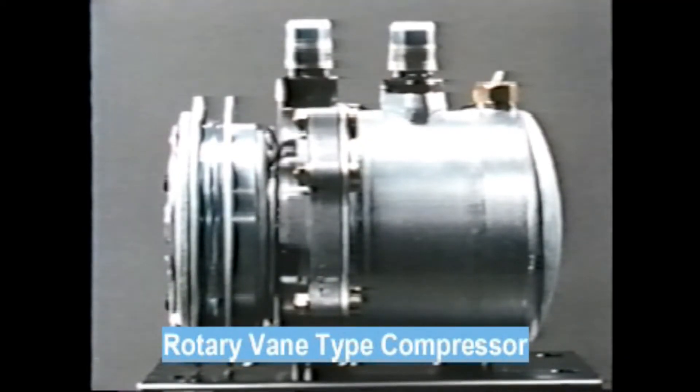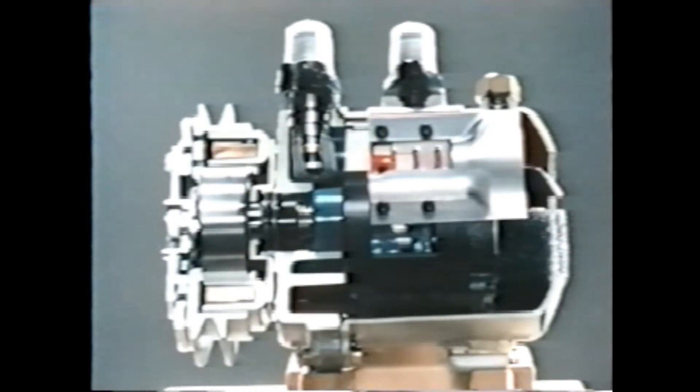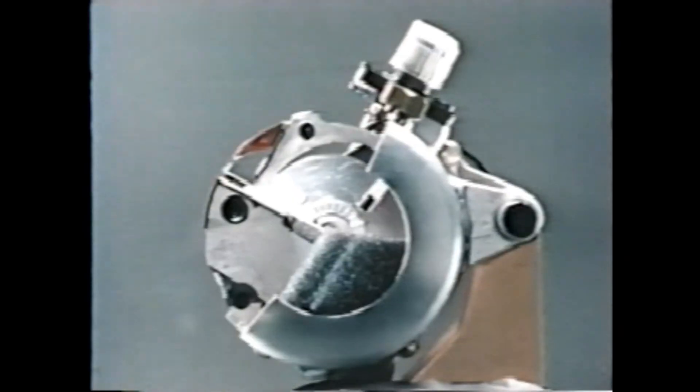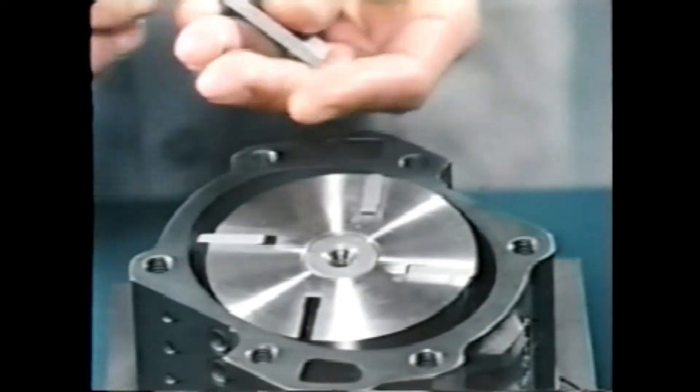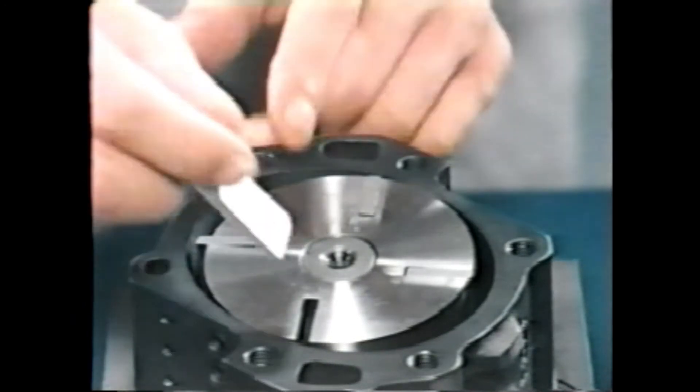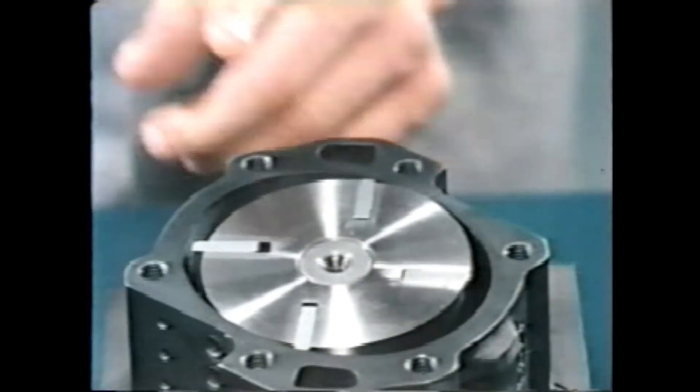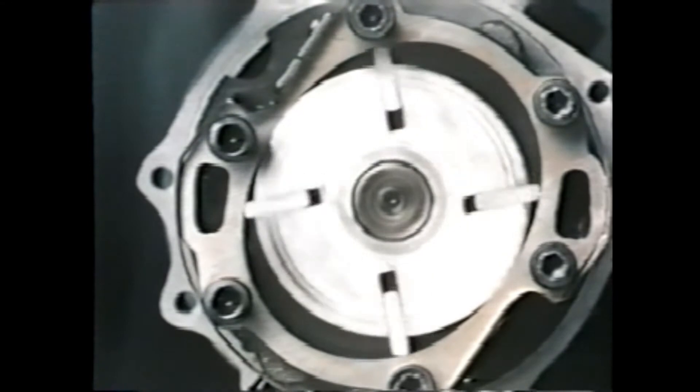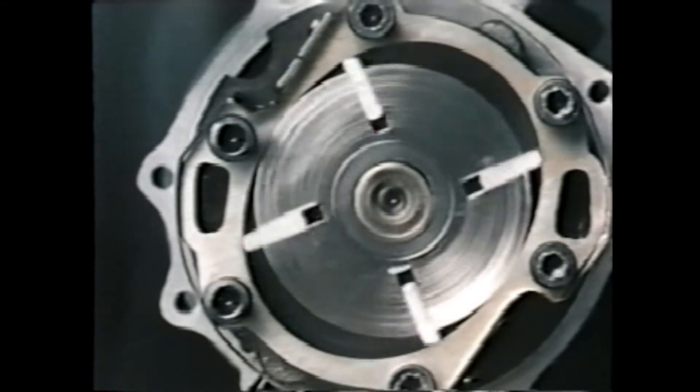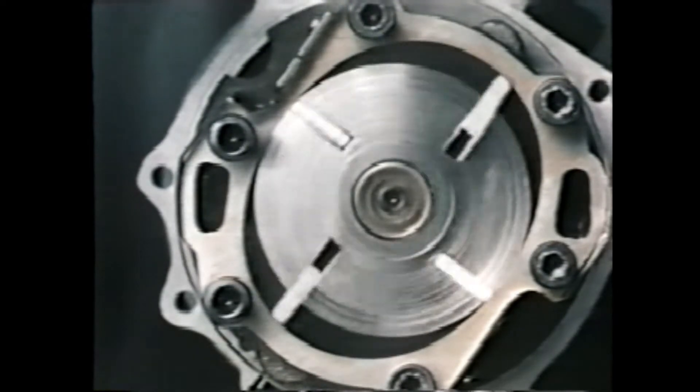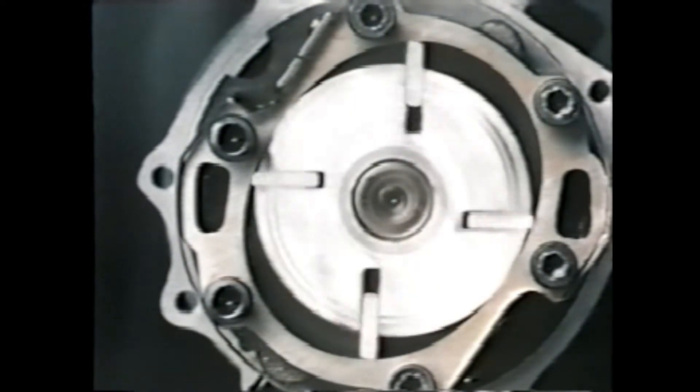Another type attracting wide attention is the rotary vane type compressor developed by Diesel Kiki. The model is an energy saving type, light in weight and small in size with a minimum of vibration and noise. This rotary vane type compressor, consisting of an elliptic cylinder and a rotor with four vanes, performs suction compression.